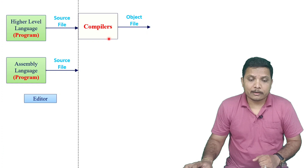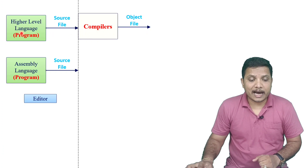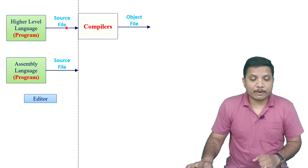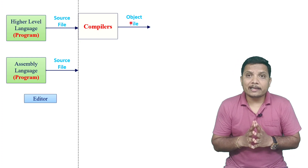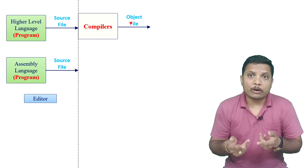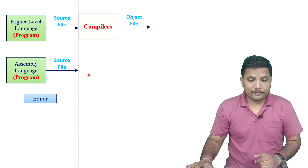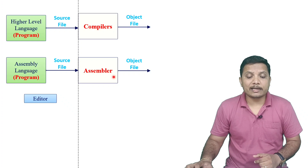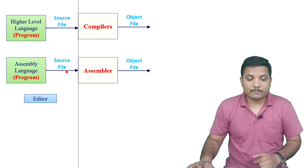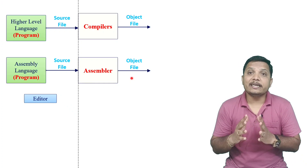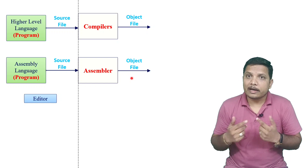Next is the compiler. If the program is written in a higher level language, the compiler is used to compile the source file and generate an object file. If the program is written in assembly language, then an assembler is used to assemble the source file and generate an object file. So we need an editor, a compiler, and an assembler as tools for embedded system development.